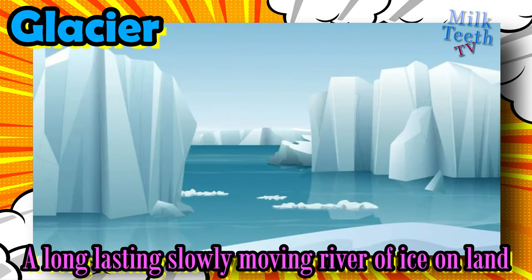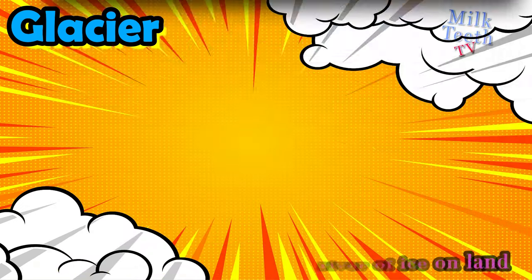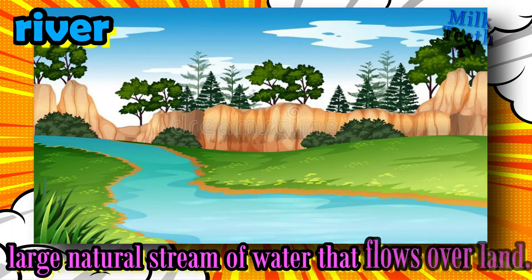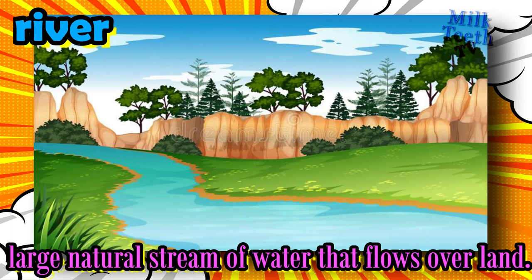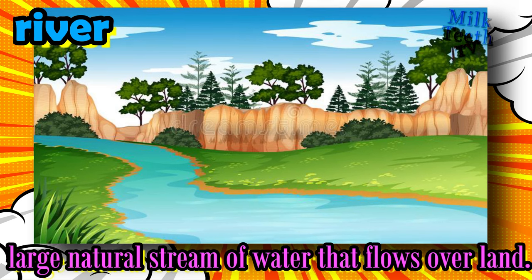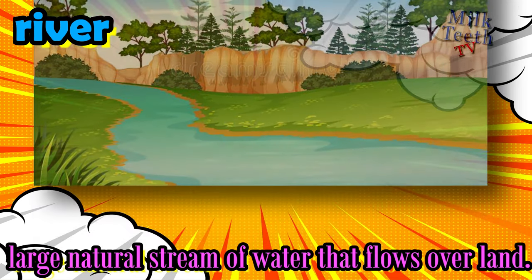Glacier: a long-lasting, slowly moving river of ice on land. River: a large natural stream of water that flows over land and might open up into the sea or the ocean.